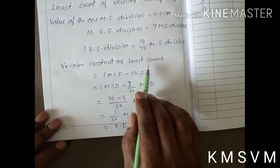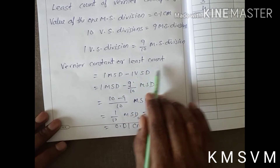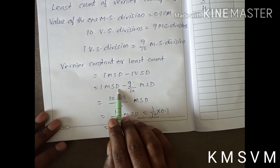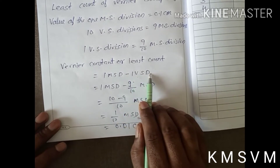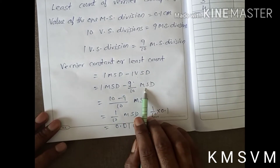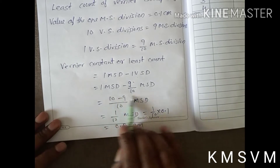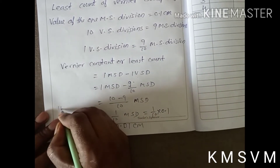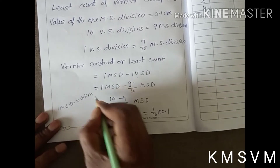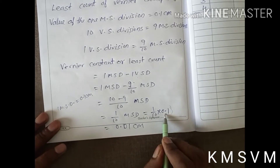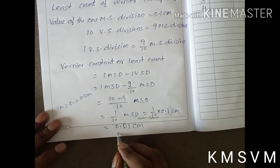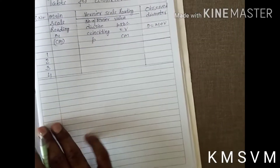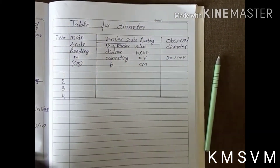The least count is also known as the vernier constant. Least count equals one main scale division minus one vernier scale division. One main scale division is 0.1 cm, and one vernier scale division is 9/10 of a main scale division. Therefore, the least count equals 0.01 cm.